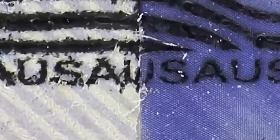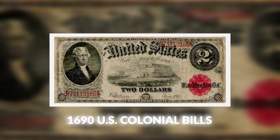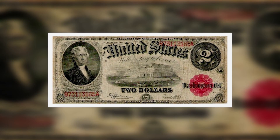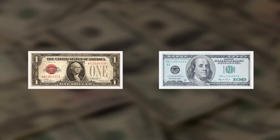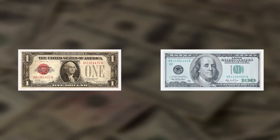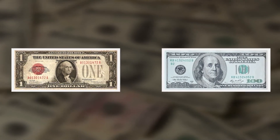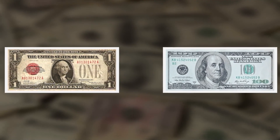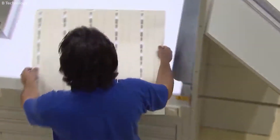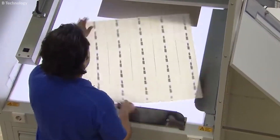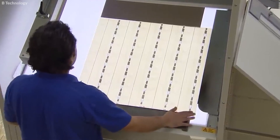The history of U.S. bills is a journey marked by constant innovation and adaptation. Originating from the early 1690 U.S. colonial bills, these notes have undergone significant transformations. This evolution primarily aims to combat counterfeiting, leading to the development of complex designs and advanced security features. From straightforward IOU notes to today's high-tech, intricately designed bills, the evolution of the U.S. dollar bill reflects both technological progress and the changing needs of a global economy.